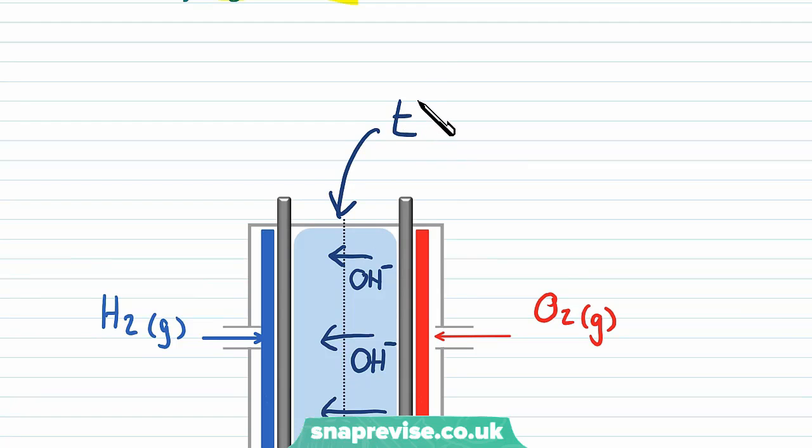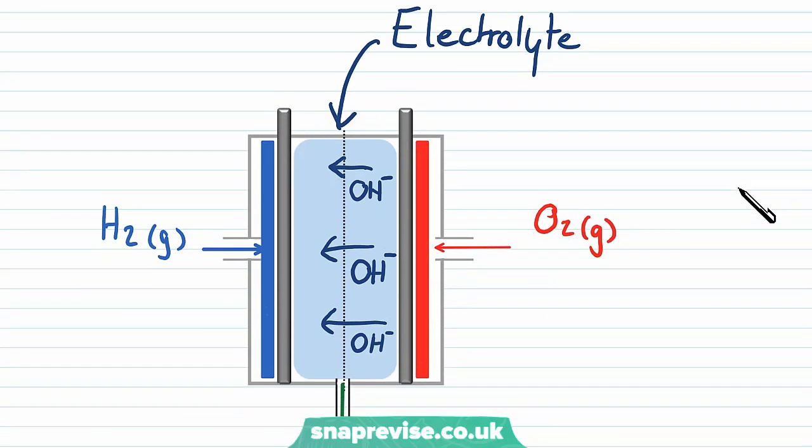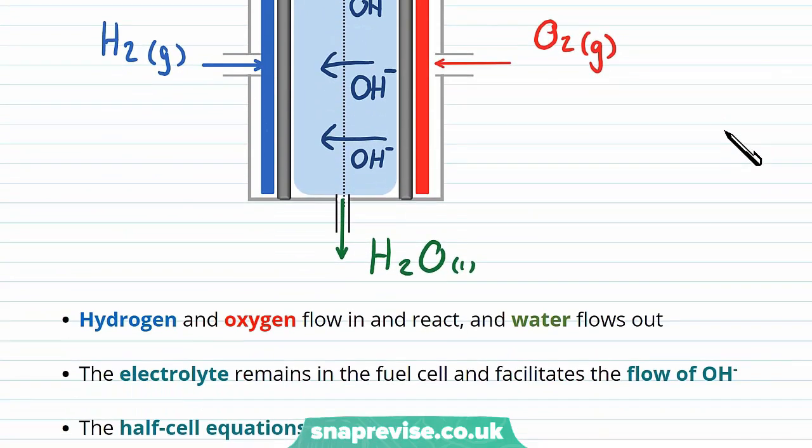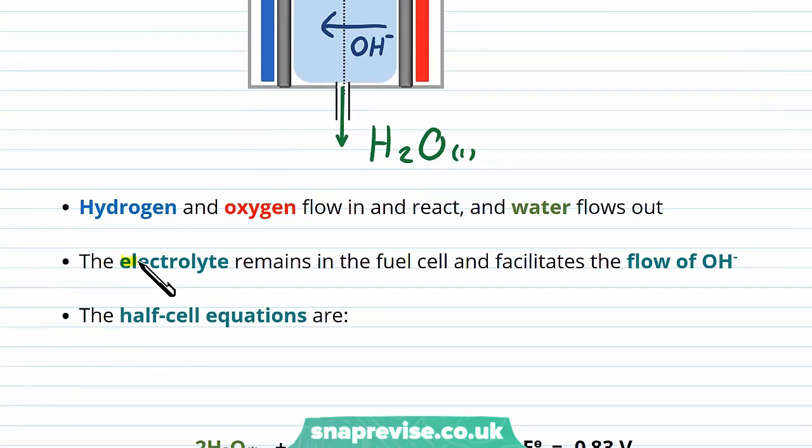contains a high number of OH ions within it, this makes it alkaline. And so it's an alkaline hydrogen fuel cell. The electrolyte is the only part of the fuel cell that remains in there and may need to be occasionally replaced.